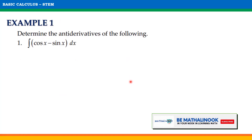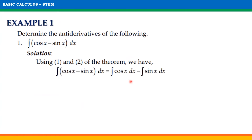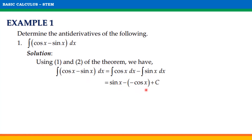For the first example, solve for the indefinite integral of cosine x minus sine x with respect to x. To solve for this, we can use theorems 1 and 2. So we will have the indefinite integral of cosine x minus sine x with respect to x, equal to the indefinite integral of cosine x with respect to x minus the indefinite integral of sine x with respect to x. Thus, the final answer will be sine x plus cosine x plus the arbitrary constant C.